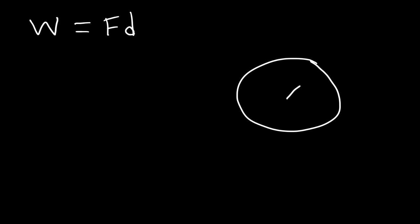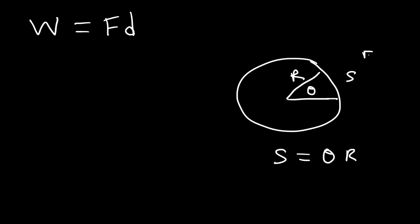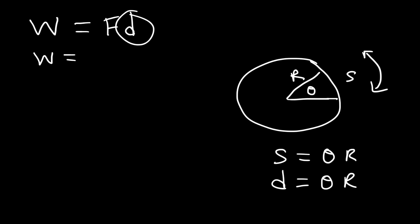Now, in trig you've learned that arc length, which is represented by S, is equal to the angle theta times the radius. In physics, the arc length S is equal to the linear displacement, which we'll call D. Theta is the angular displacement and R is the radius of the circle. So we can replace the linear displacement D with the angular displacement times the radius.